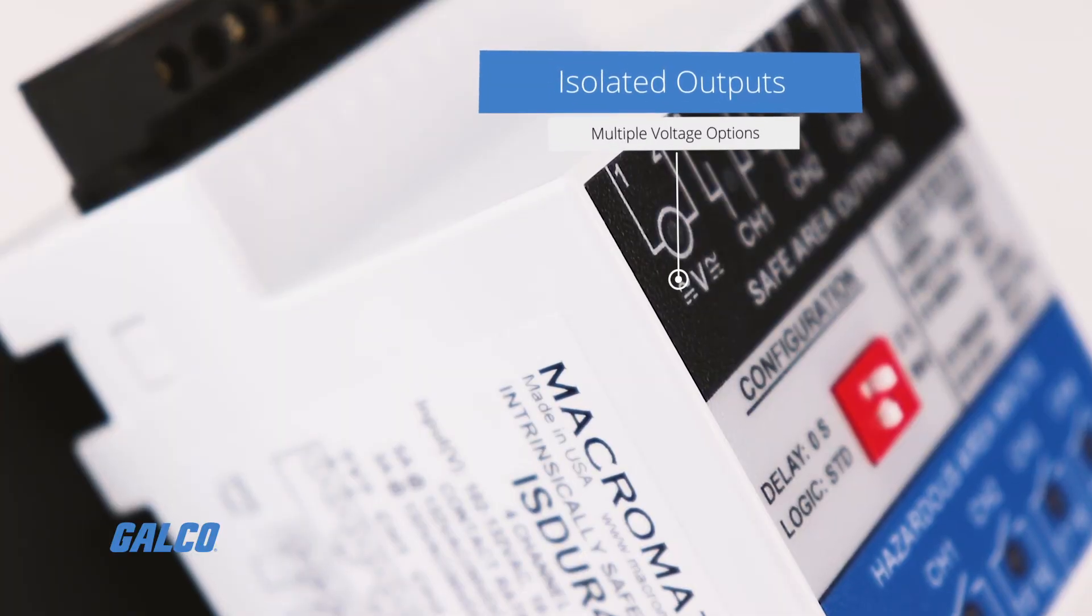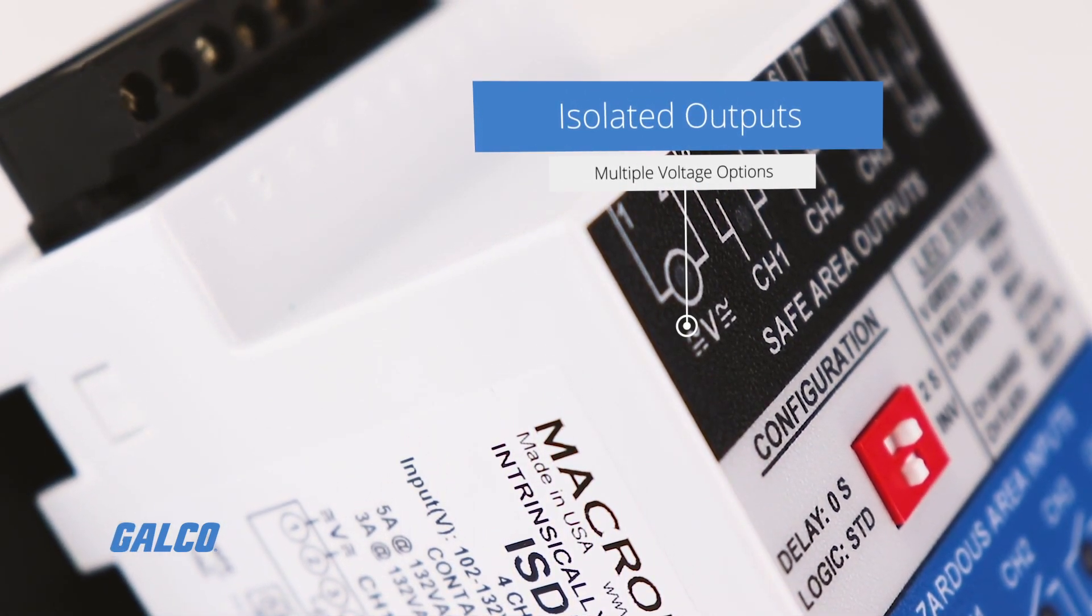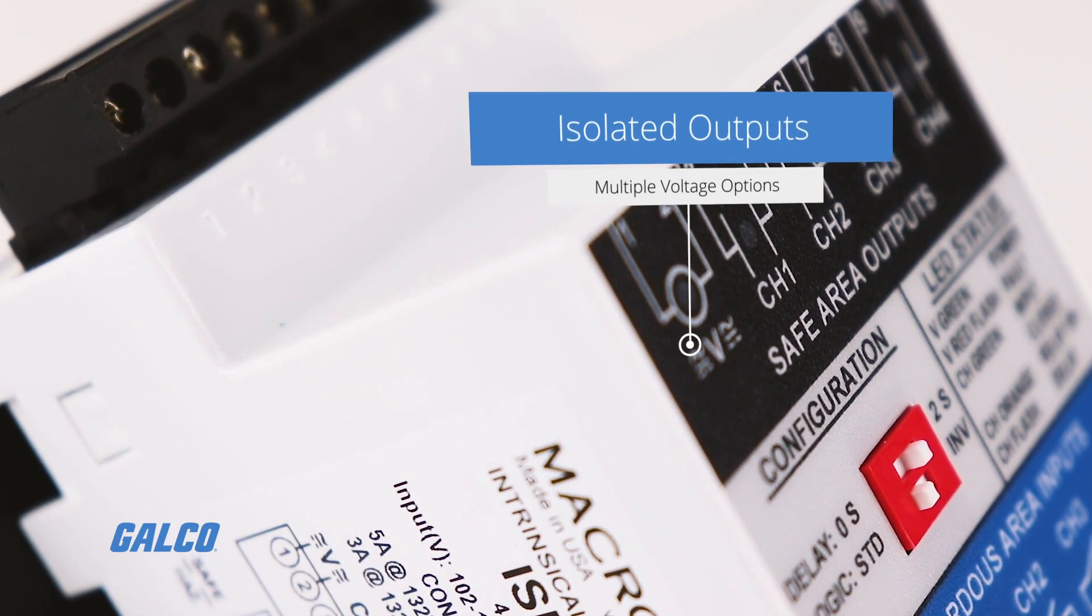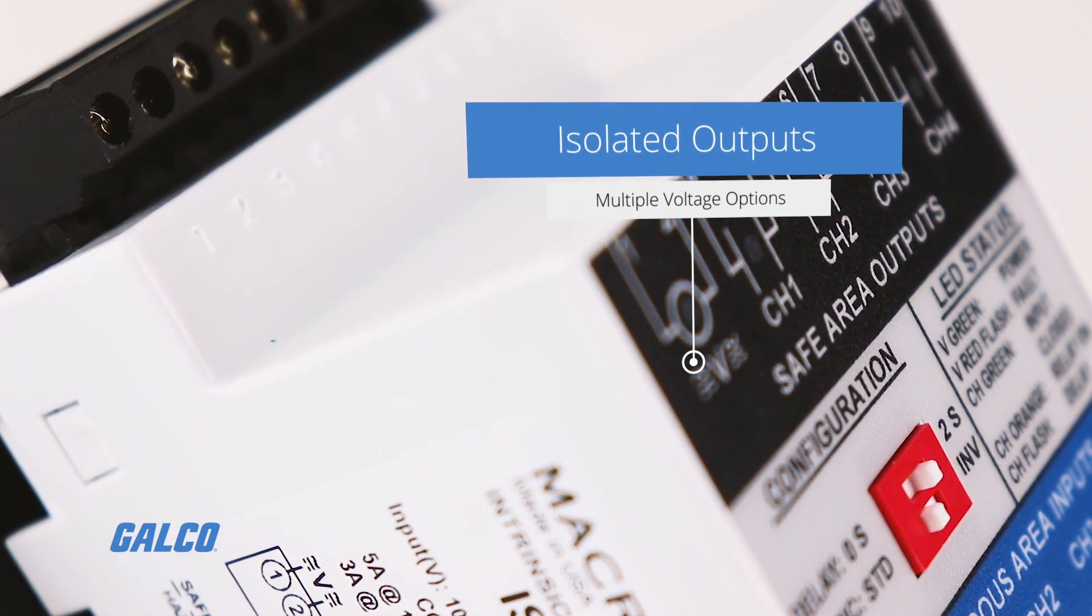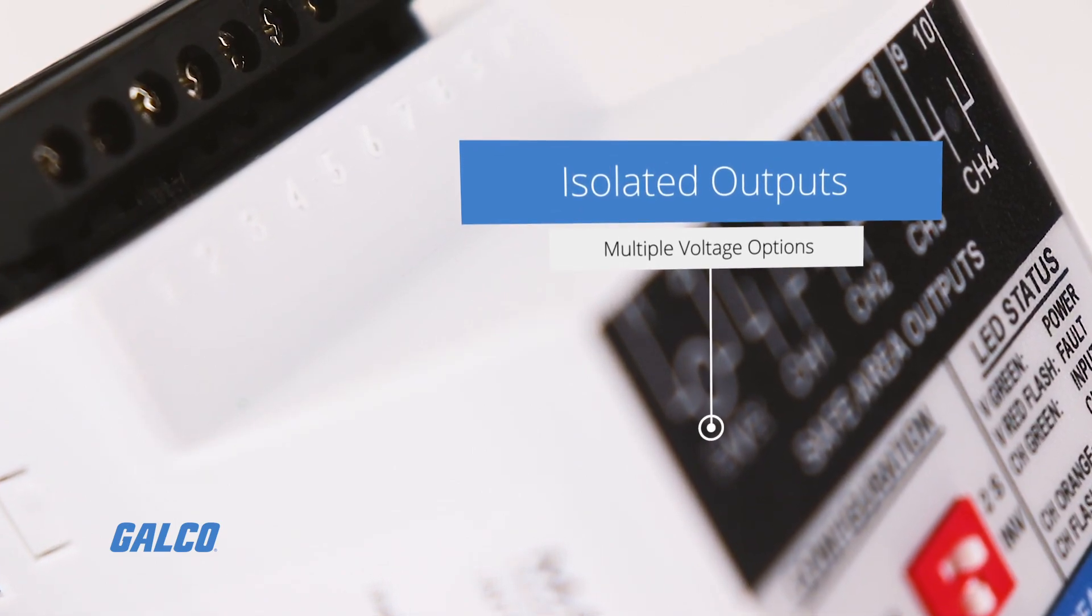Each output relay has two terminals for isolation from the others, allowing outputs to be at different voltages such as contactor coils at 120 volts AC and an alarm circuit at 24 volts DC.